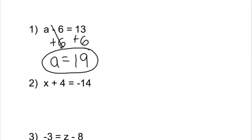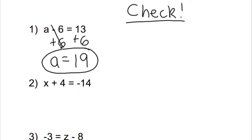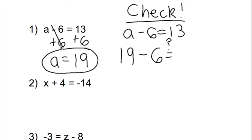We have to make sure this is correct, and this is where we check. The cool thing about algebra is that you can determine if your answer is correct without even looking at an answer key or checking with your teacher. The original equation was a minus 6 equals 13. We said a was 19, so we substitute that in: 19 minus 6 — is that equal to 13? Yes, 19 minus 6 is 13. 13 equals 13, and we know we are correct.